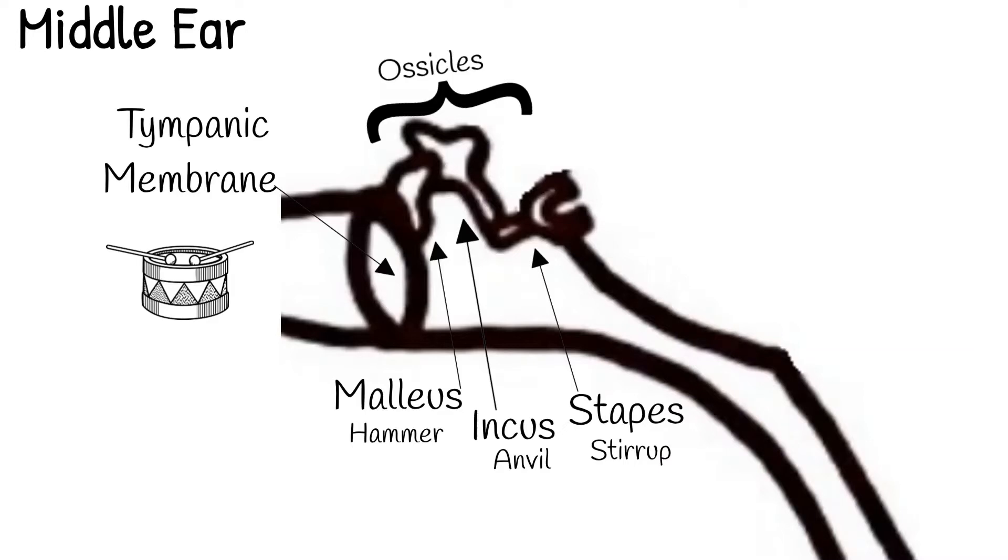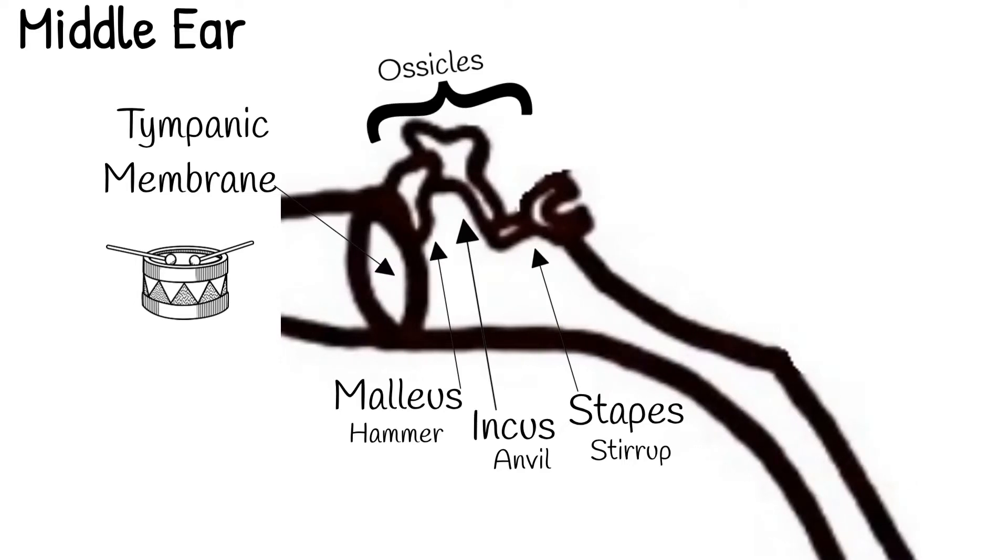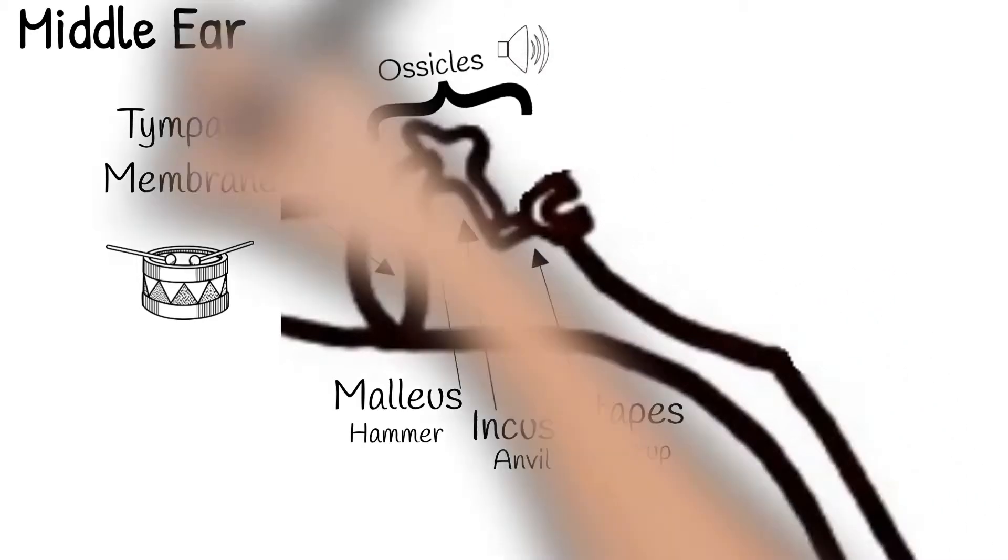They all touch each other and the malleus touches the tympanic membrane while the stapes goes through what is called the oval window. When the tympanic membrane moves it causes the malleus to move which then causes the incus and stapes to move as well. Their vibrating back and forth amplifies the sound. All of these aid the ear in hearing.